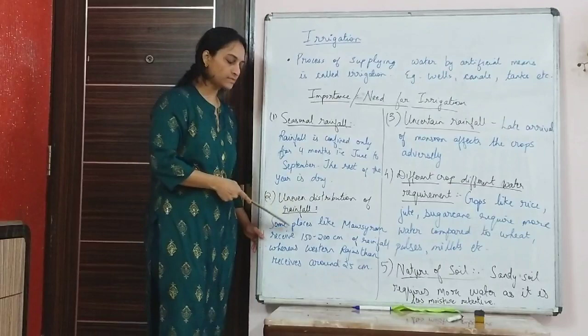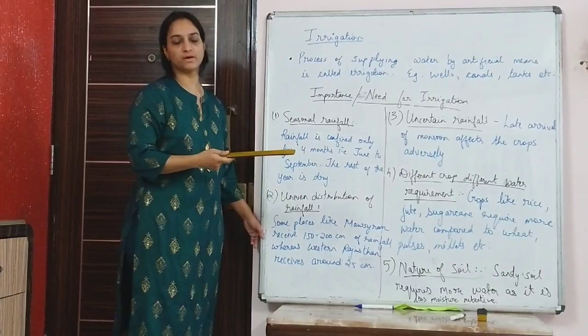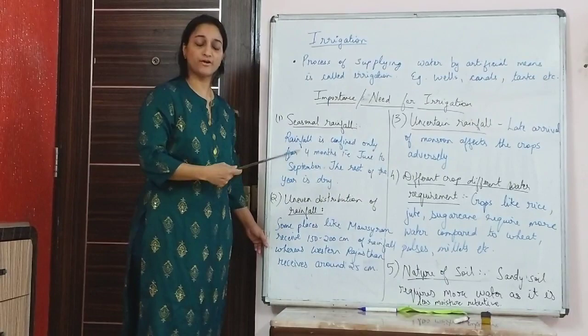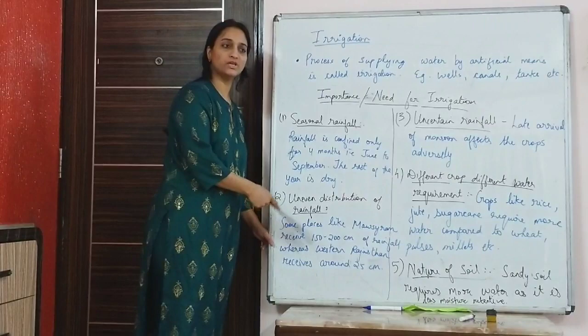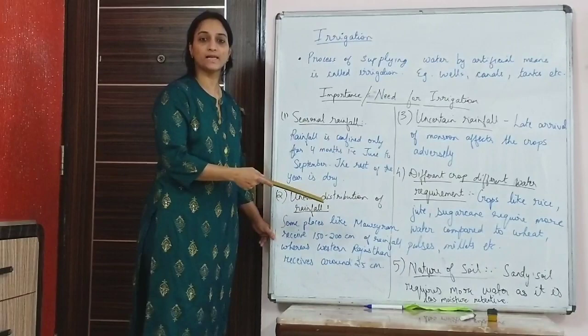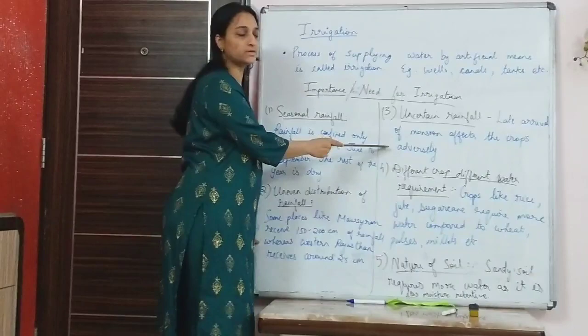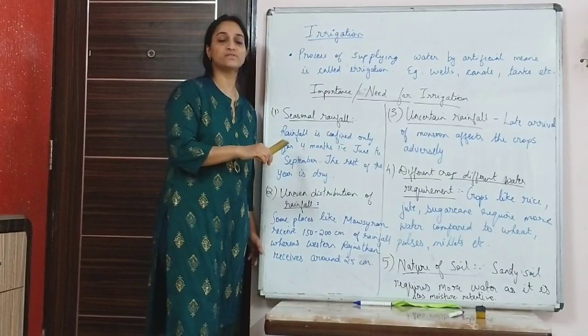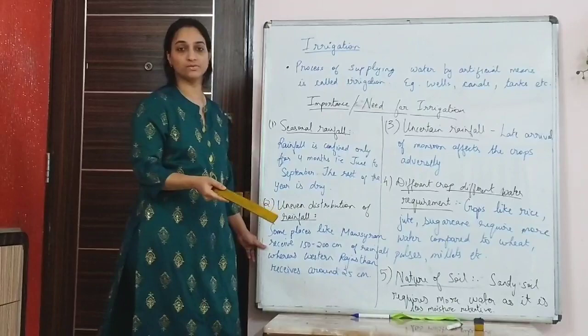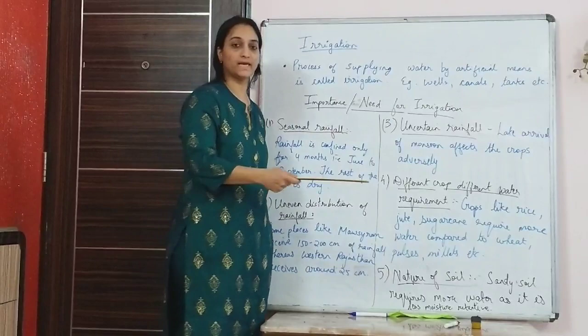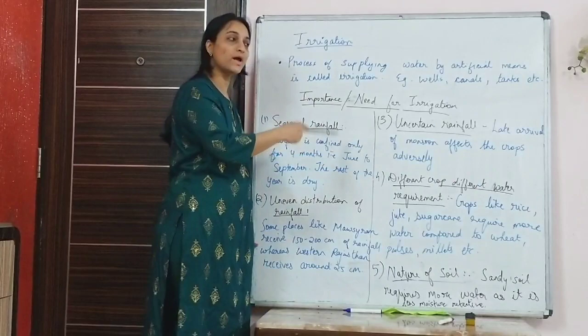Uncertain rainfall is another reason — the monsoon sometimes arrives late, which adversely affects crop production. At those times irrigation is required to supply water to the fields. Different crops require different amounts of water: crops like rice, jute, sugarcane, and cotton require a good amount of water — paddy fields are actually submerged in water during the growing season — while crops like wheat, pulses, and oilseeds require less water. Either way, irrigation is important.